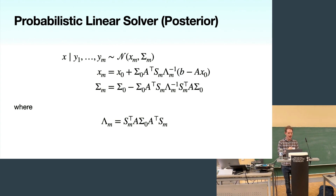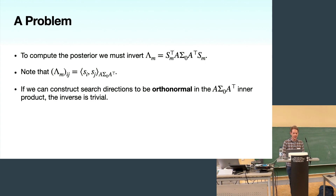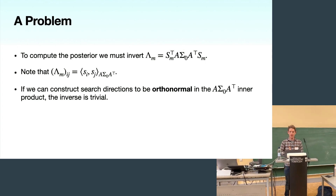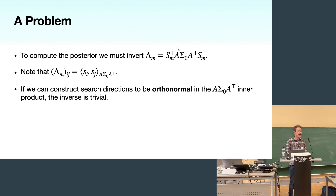Fortunately, we can make a good choice of search directions which simplifies this problem. Λ_M is a Gramian matrix formed by taking inner products between all pairs of search directions in the inner product induced by A Σ_0 A^T. If we construct search directions that are orthonormal to each other in this inner product, then Λ_M becomes diagonal or even an identity matrix — and even I, a statistician, can remember how to invert an identity matrix.